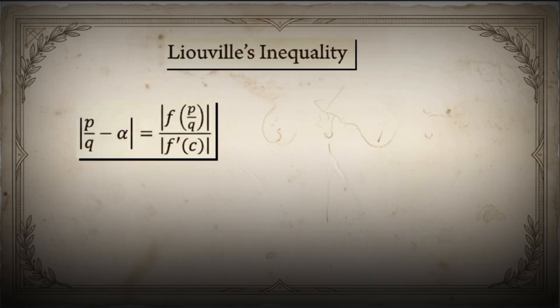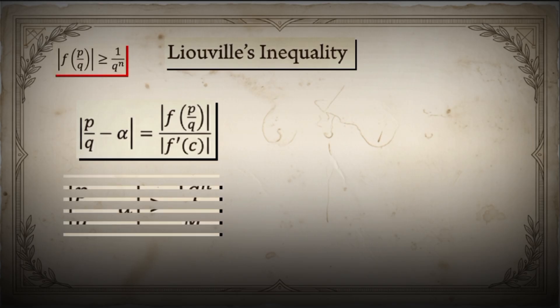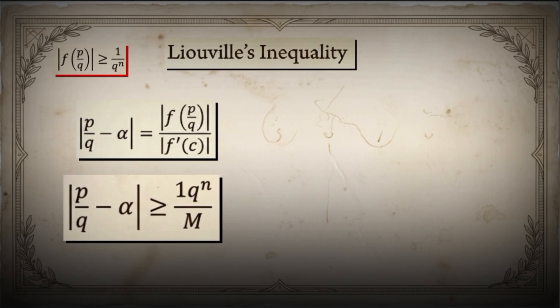The absolute value of p over q minus alpha equals the absolute value of f of p over q divided by the absolute value of f prime of c. This gives us the absolute value of p over q minus alpha is greater than or equal to 1 divided by m times q to the power n. And here it is!